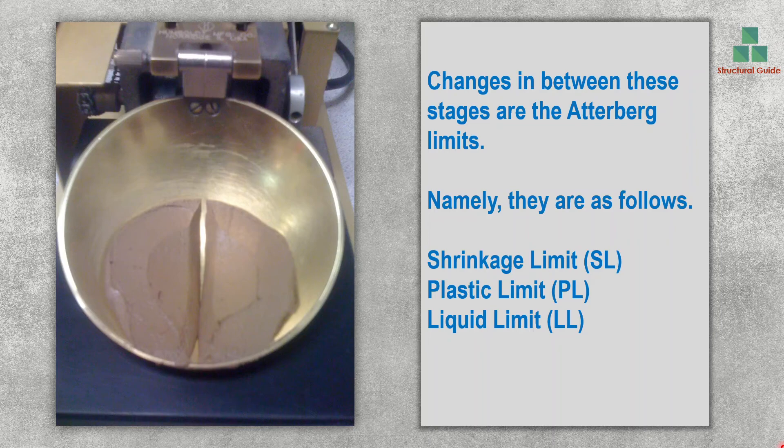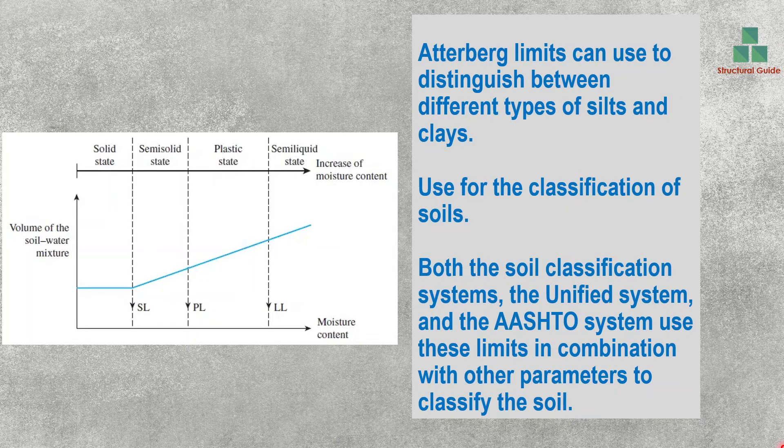These limits are defined based on the change from one soil stage to another. Atterberg Limits can be used to distinguish between different types of silt and clay, and are used for classifying soils. Both the Unified Classification System and the ASTM system use these Atterberg Limits to classify soil, in combination with other methods.